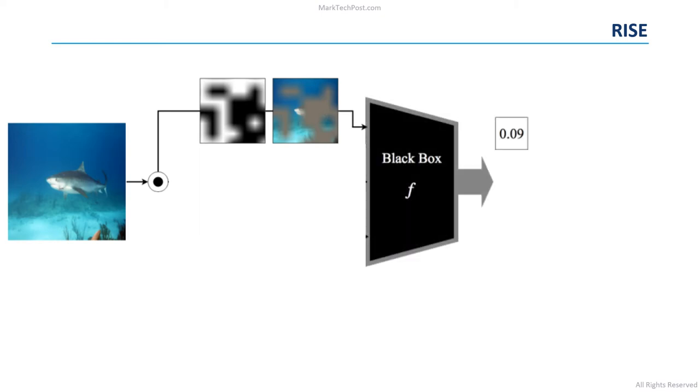Then, the confidence score for the masked image is computed by the black box model, in this case a deep neural network. The intuition is that the score of the masked image is high when pixels preserved by the mask are important for the network to predict the class that we are considering, in this case shark.